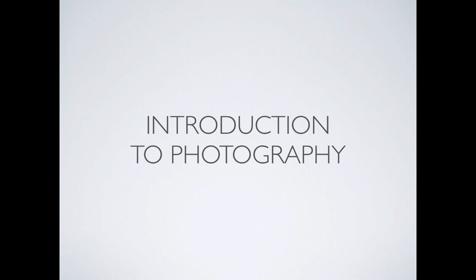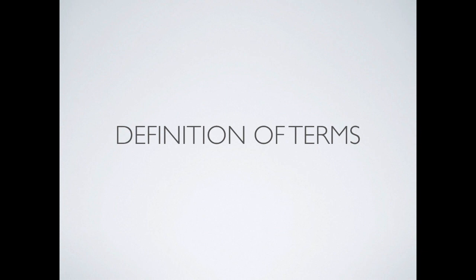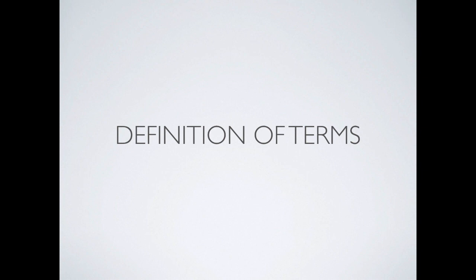Let's start with the definition of terms so we have some common ground. A camera body is essentially a light-proof box. Originally it was a box with a piece of sensitive material — film — that you'd expose to light temporarily to get your picture. We don't use film anymore; it's all digital. But essentially it's the same concept: a light-proof box with a digital sensor that you expose to light.